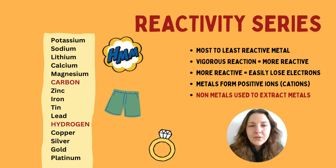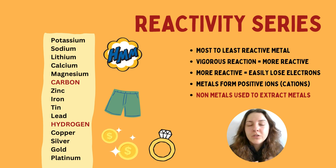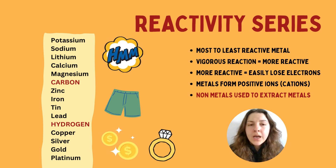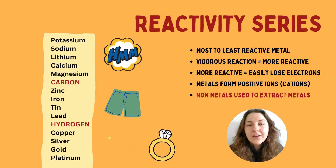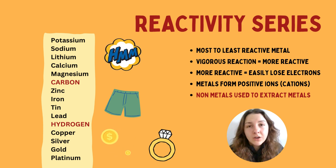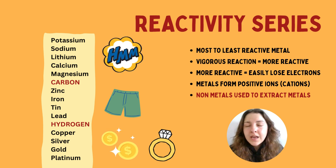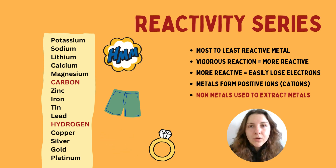The most reactive metals are at the top and the least reactive at the bottom. We know the top ones are more reactive because they react vigorously — we can observe potassium, lithium, or sodium ignite when added to water. Remember that metals always form a positive ion, or cation, because they lose and donate electrons, becoming more stable. They donate those electrons to non-metals, forming ionic or metallic bonds.